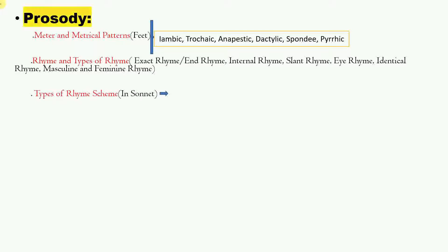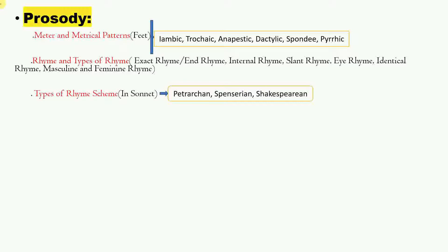Next are types of rhyme scheme. In sonnets, you have the Shakespearean sonnet with patterns like ABAB CDCD EFEF GG. There are three common rhyme schemes: Petrarchan, Spenserian, and Shakespearean. You need to understand the rhyme scheme pattern of each — Petrarchan sonnets, Spenserian, then Shakespearean. You might be given a Shakespeare poem and asked to identify its rhyme pattern.